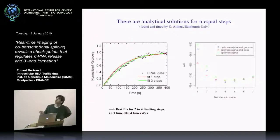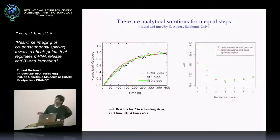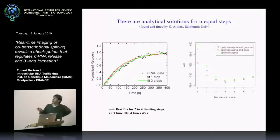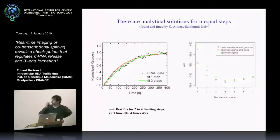This solution was found by Stuart Aitken at the University of Edinburgh, who collaborated with us. Fitting the FRAP curve with all models — for a single step you get an exponential (the red curve) — you optimize parameters to find the best fit, then repeat for two-step, three-step models, etc. The results show an improvement when going from one to two to three steps, then from three to six steps the goodness of fit is about the same, and then it gets worse. This tells you there are between two to six rate-limiting steps in the model.